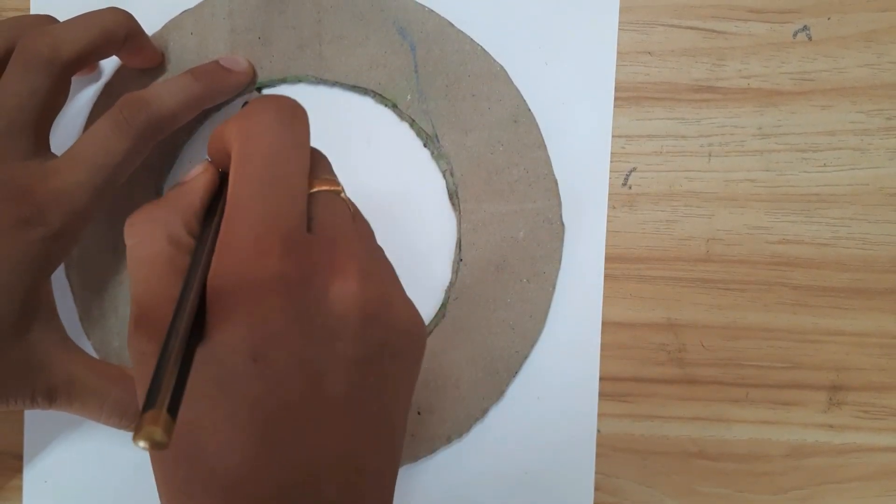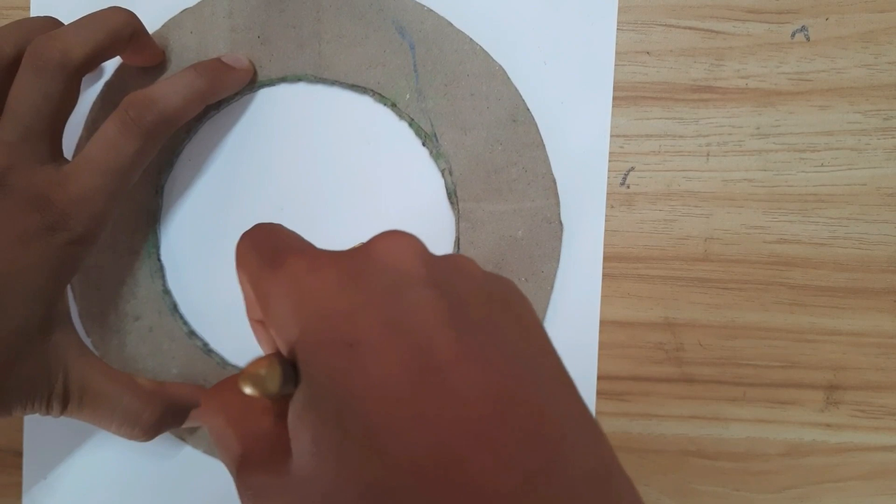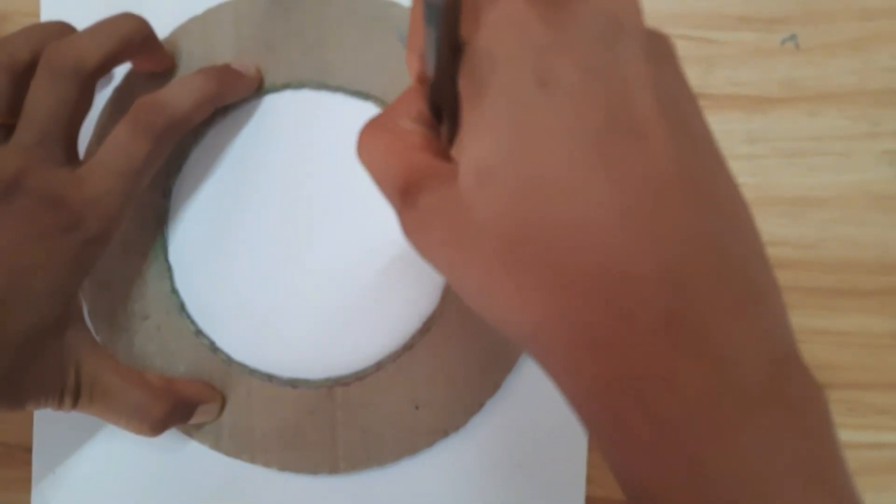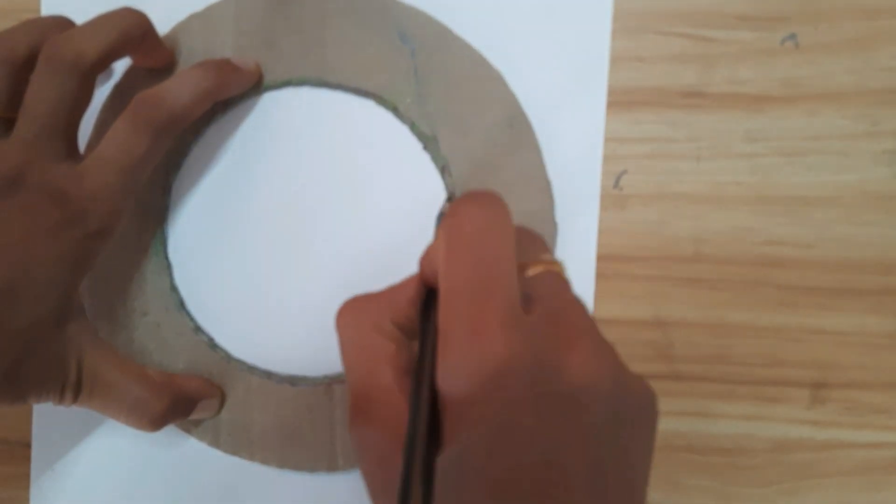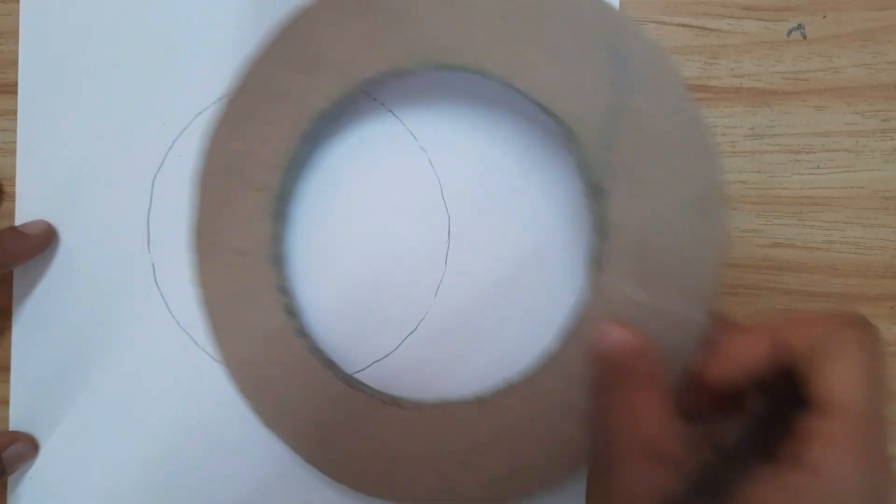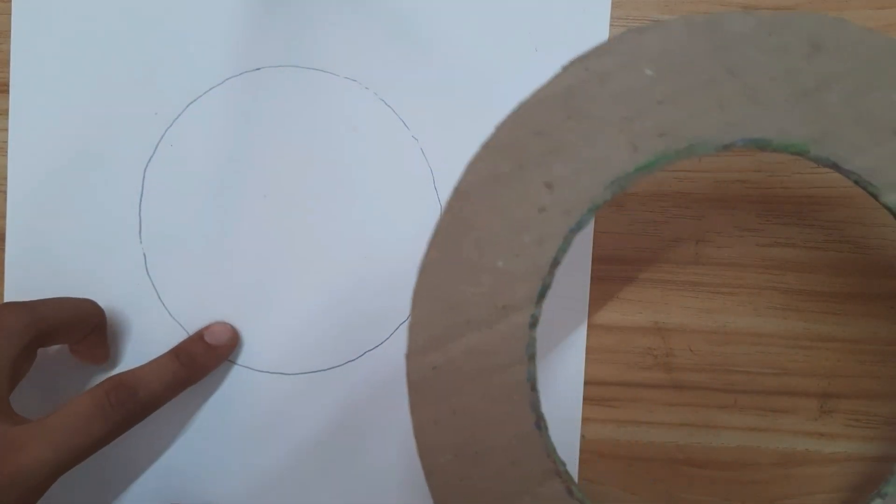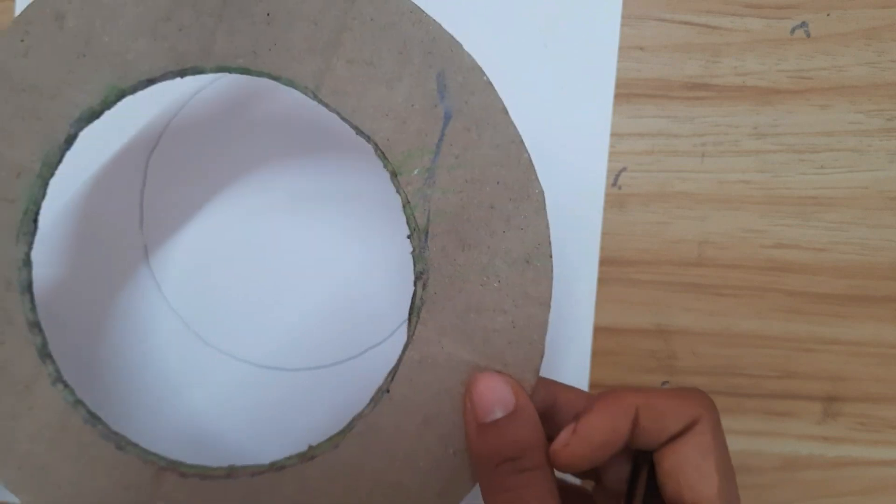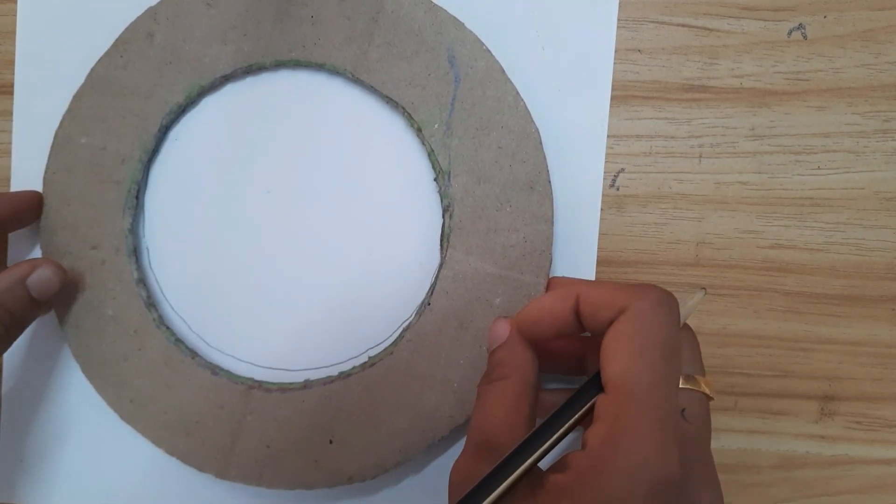Now start drawing the circle. This way I have made the circle. Please do not remove this cardboard, place it as it is.